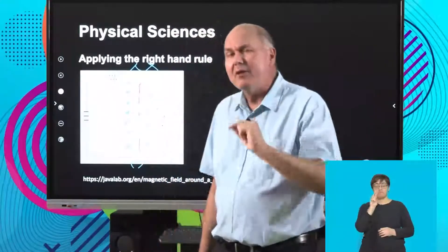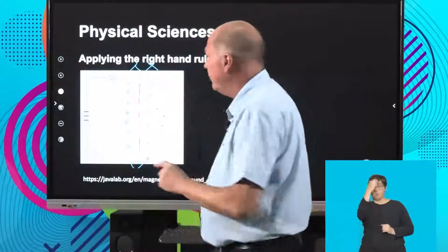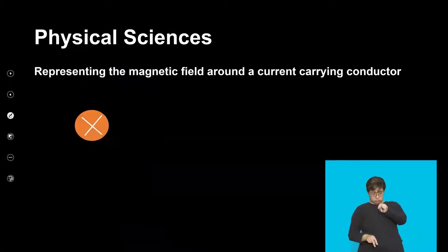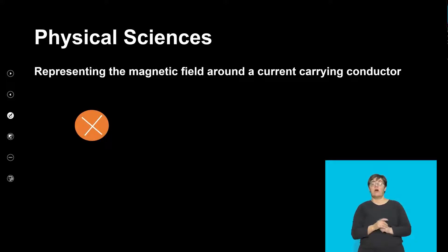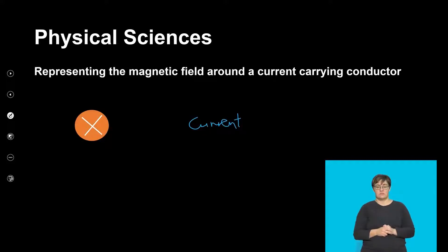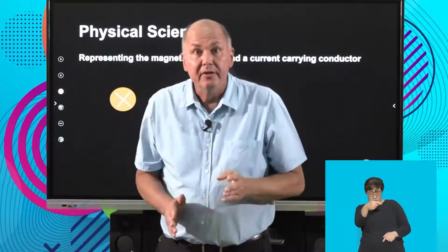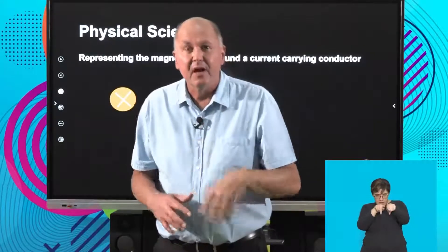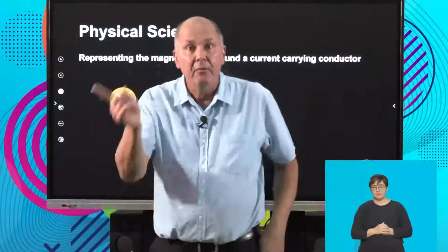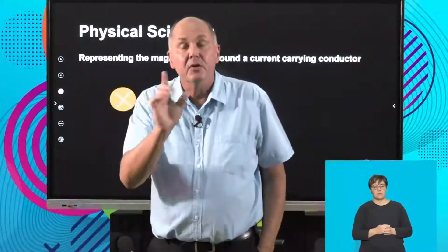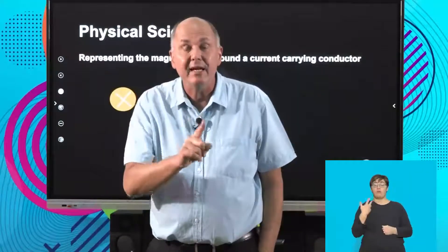Let's have a look now in terms of where our eye could be, showing a different position. If I have taken a cross-section, and my eye is looking from the bottom, the cross is going into this plane — it's going into the conductor. What effect is that going to have? It's going to produce a magnetic field around the conductor. And so we need to be able to use our right-hand rule to show that.